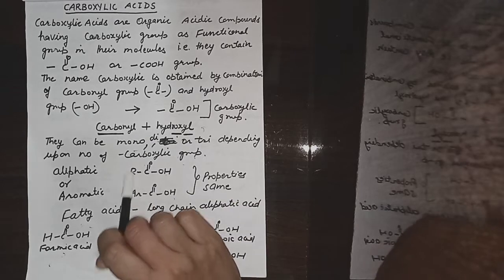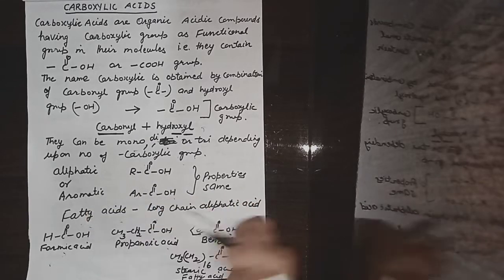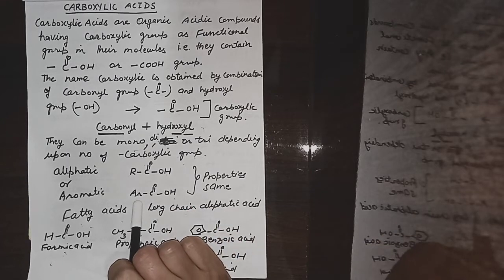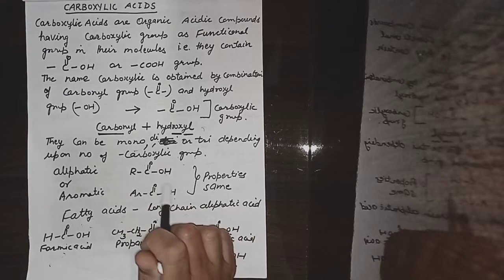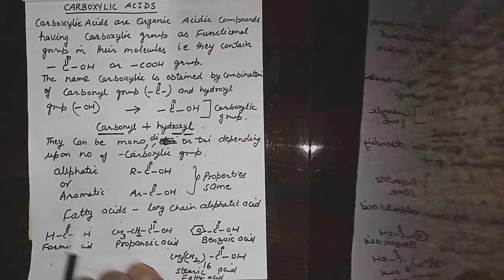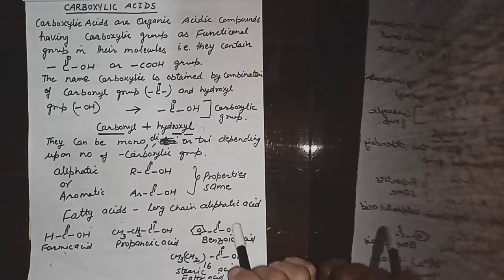Carboxylic acids can be aliphatic or aromatic. When the carboxylic group is attached to an alkyl group, we call them aliphatic carboxylic acid. When the carboxylic group is attached to an aromatic ring, that is a phenyl or aryl group, we call them aromatic carboxylic acid. The properties of aliphatic and aromatic carboxylic acids are the same. In addition, there are also fatty acids, which are long chain aliphatic acids.